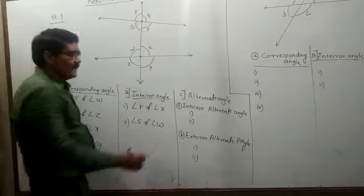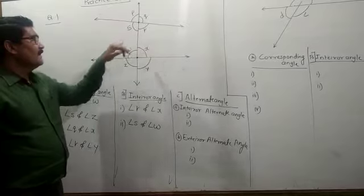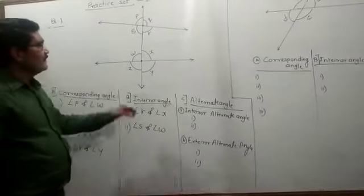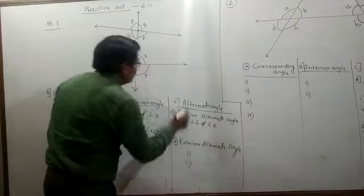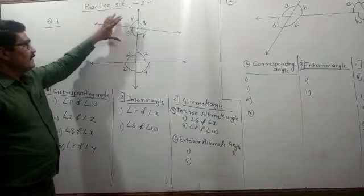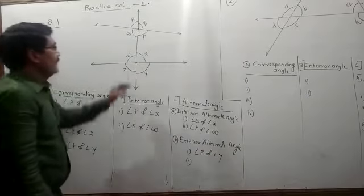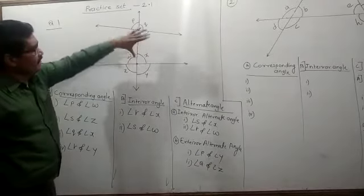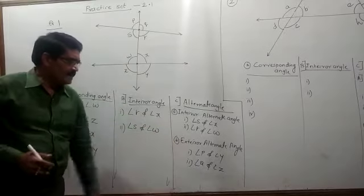Now we go to the alternate angles. Alternate angles are divided into two types: interior alternate angles and exterior alternate angles. The interior alternate angles are angle S and angle X, and angle R and angle W. The exterior alternate angles are angle P and angle Y, and angle Q and angle Z — which are on the exterior of these two lines.